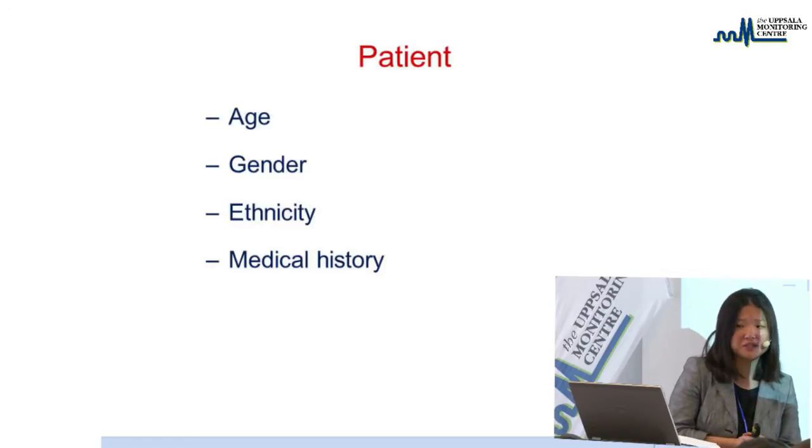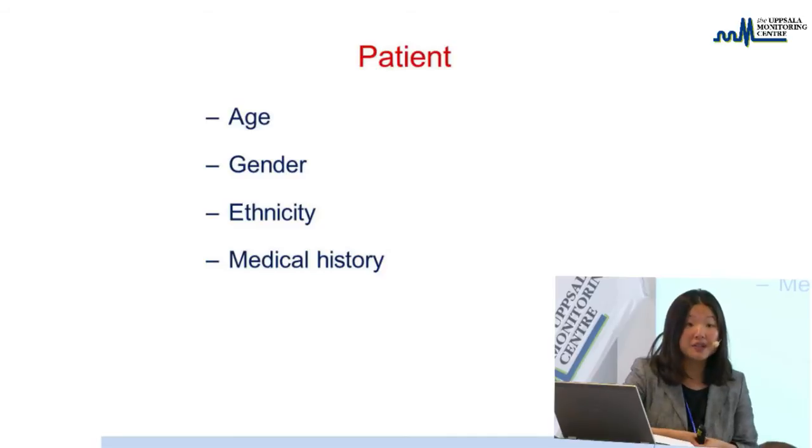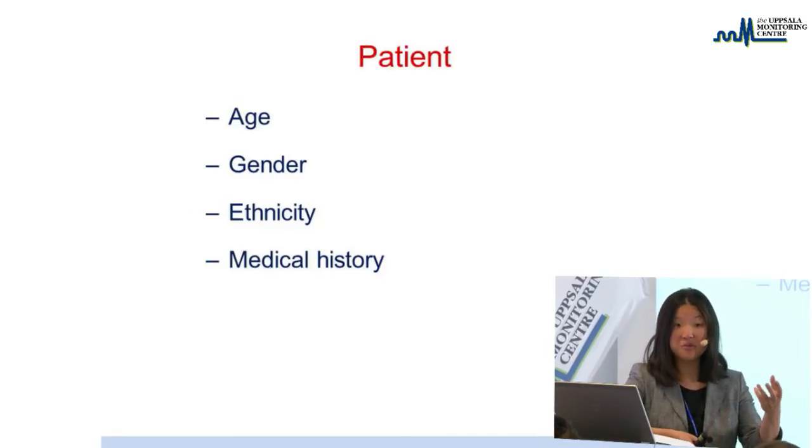About the patient: you want to know age and gender - to assess, for example, do I have a very old person with decreased renal function which will affect how they react to a drug? Sometimes it would be interesting to know ethnicity, though in some countries that would not be possible. For example, in the Netherlands we would never be able to include that, although some polymorphisms and susceptibility for certain events are based on ethnicity. You also want to know something about the patient's medical history to assess if it can influence the event.